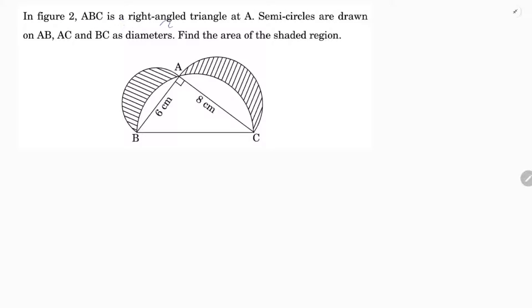In figure ABC is a right angle triangle, right angle at A. Semicircles are drawn on AB, AC and BC as diameters. Find the area of the shaded region.